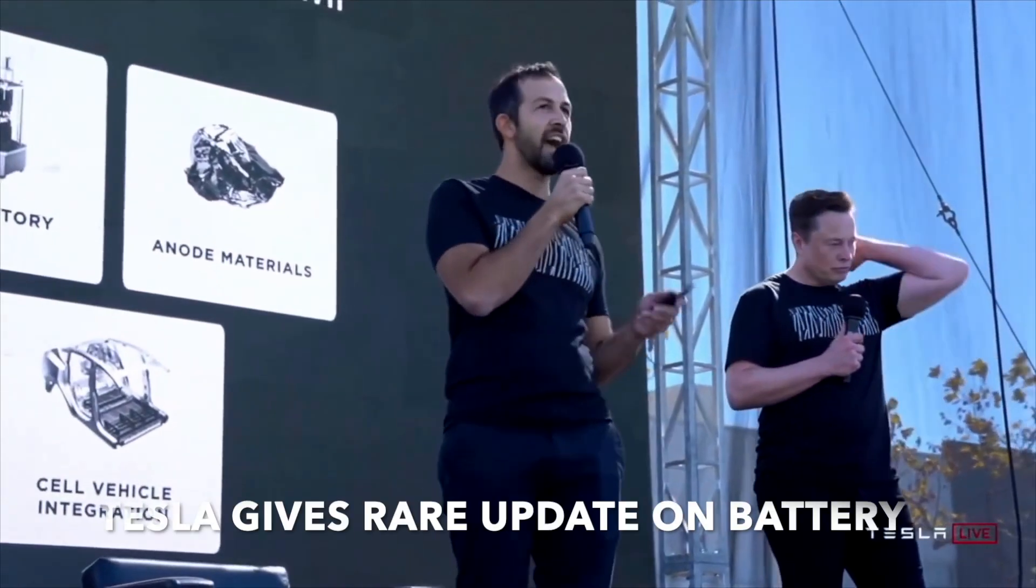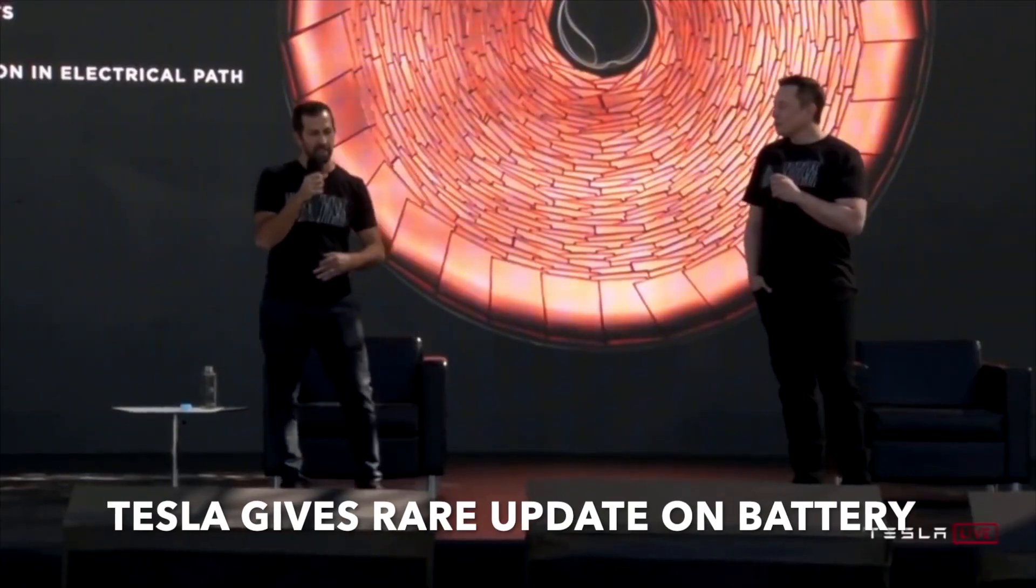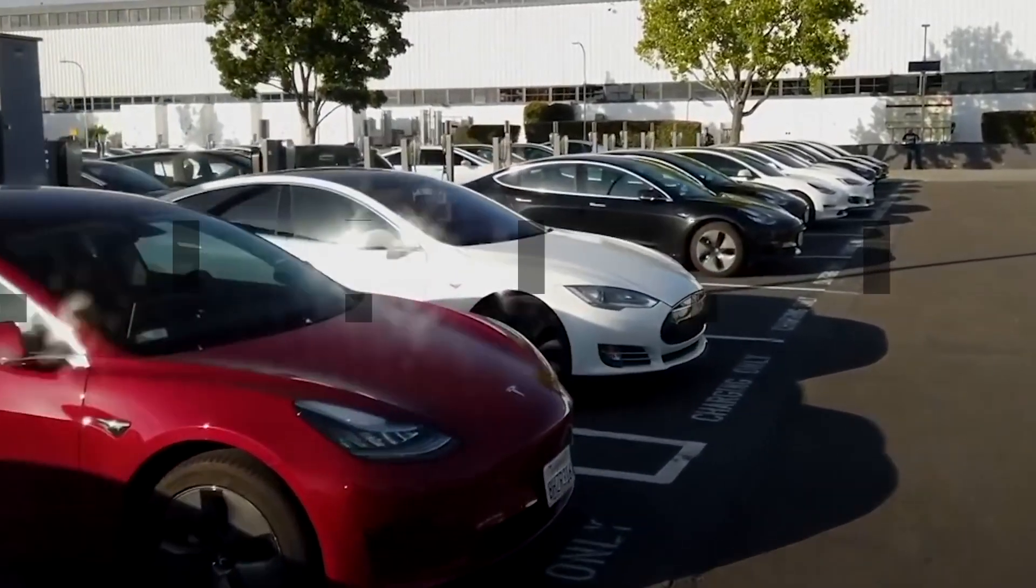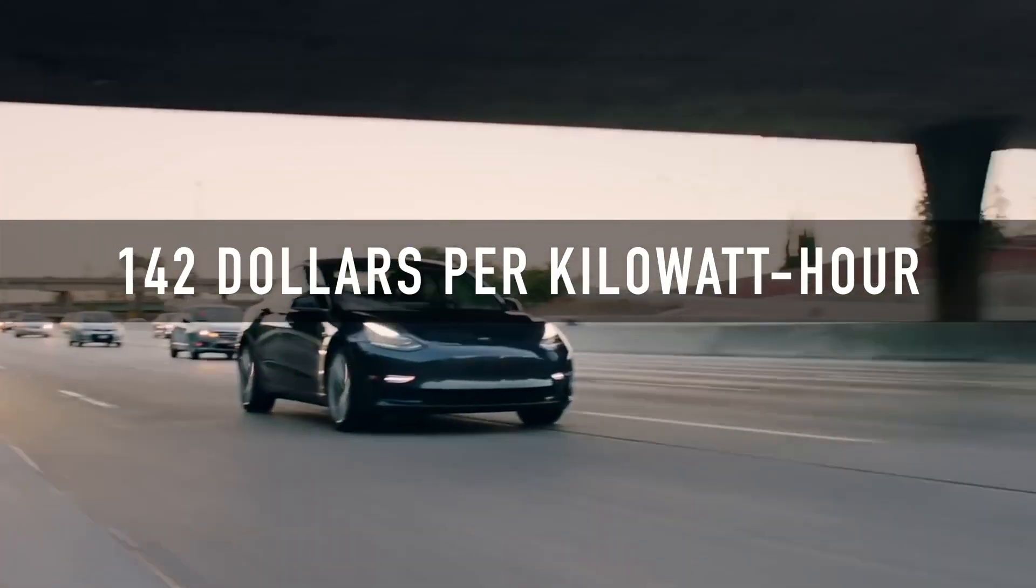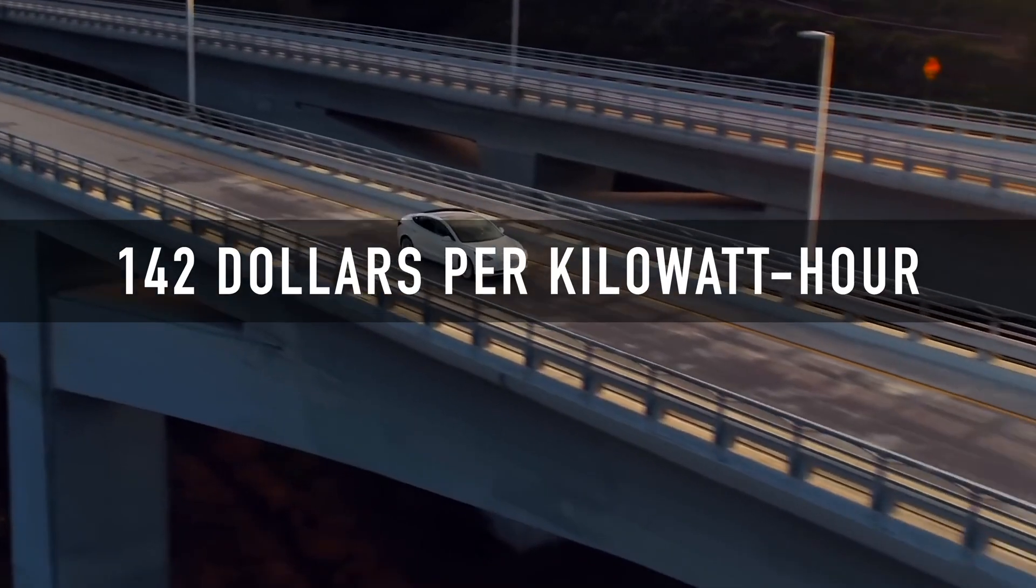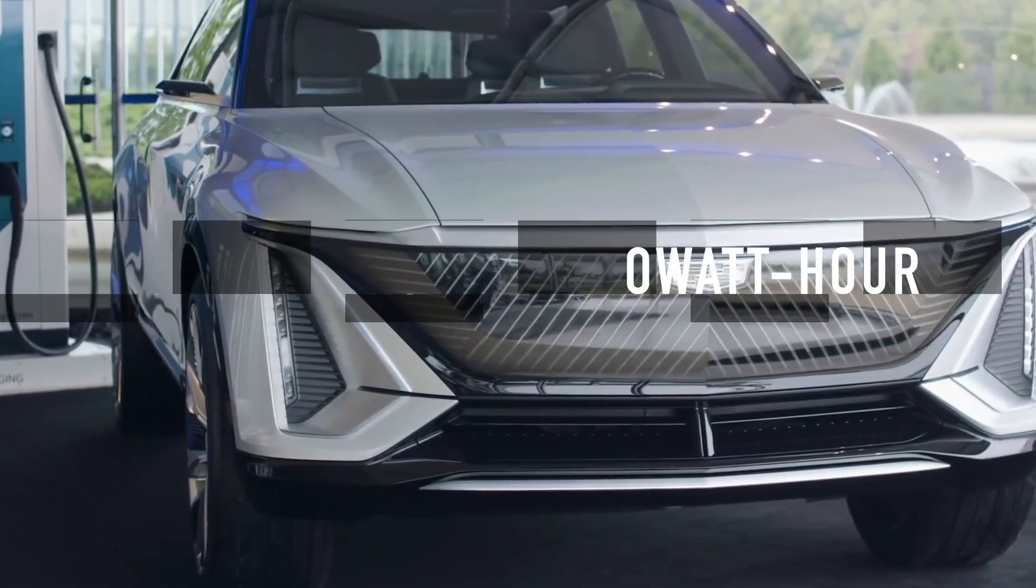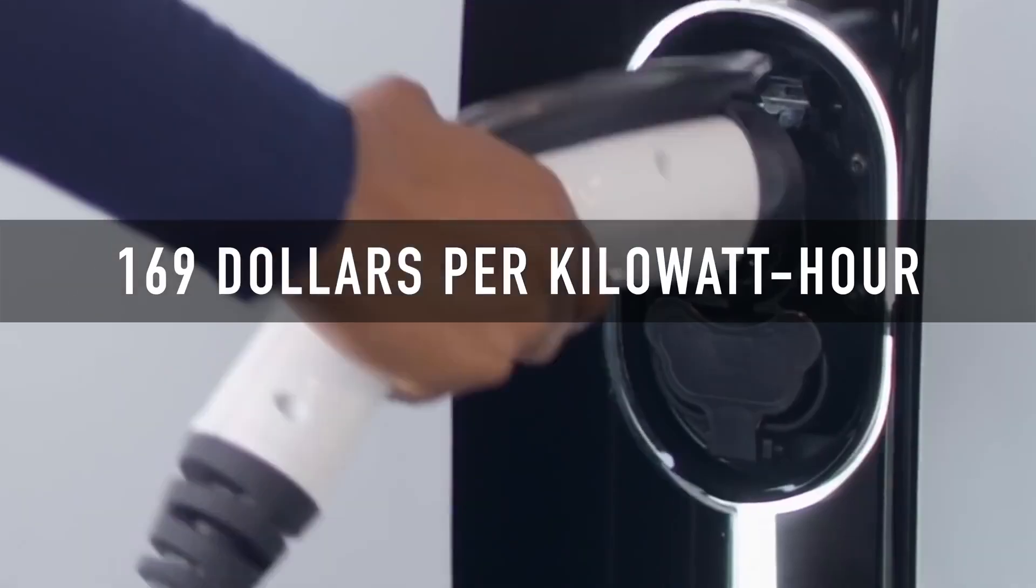Tesla gives rare update on 4680 battery cell production. Still some work to do? Tesla has released a rare update on 4680 battery cell production, which is critical to launching the automaker's upcoming new electric vehicle programs. The company confirms that there's still some work to do.